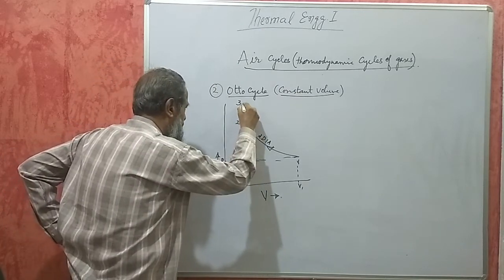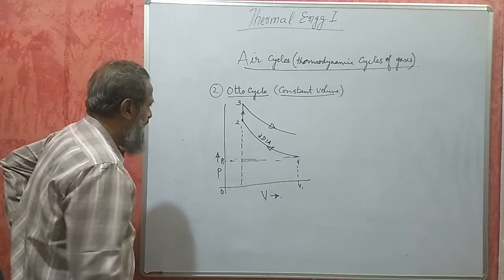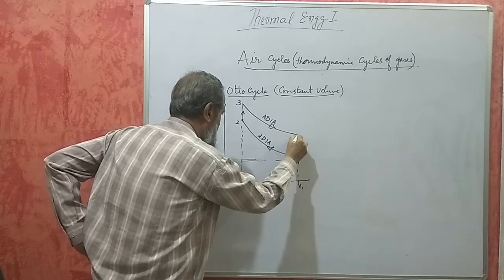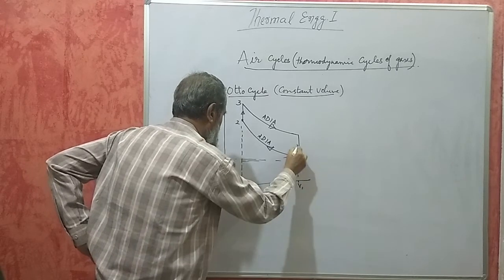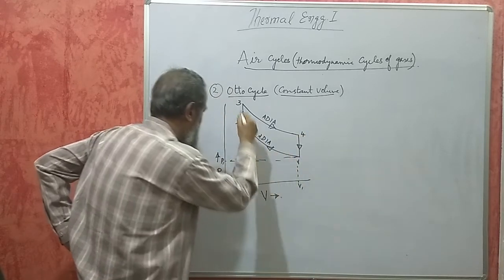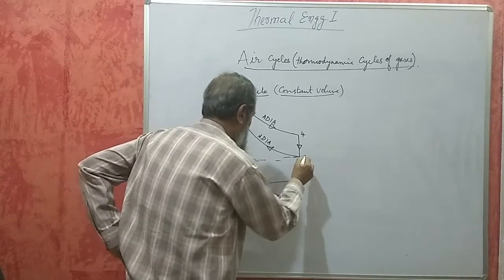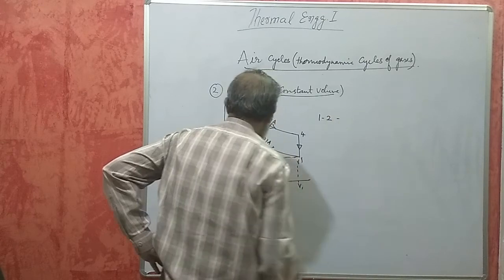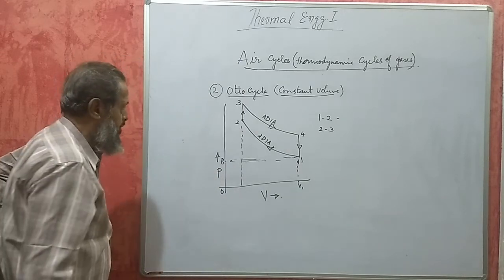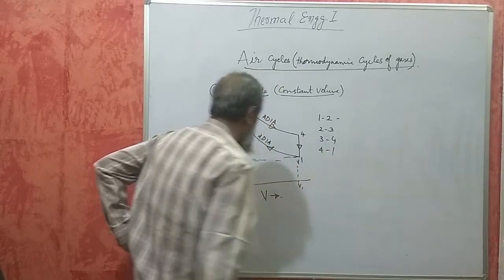After combustion is over, the burnt gases expand in an adiabatic process — this is the power stroke (3 to 4). The gases are then swept out during exhaust, returning to the initial condition (4 to 1). The four processes in the Otto cycle are: 1-2 adiabatic compression, 2-3 constant volume heat addition, 3-4 adiabatic expansion, and 4-1 constant volume heat rejection.